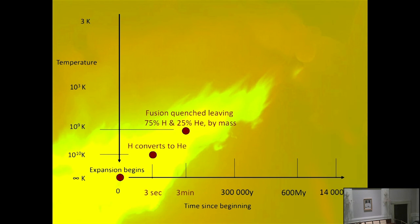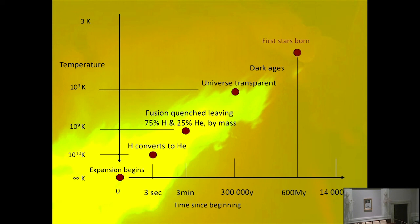And then everything expands, cools, and dilutes until the gas becomes neutral and transparent. The universe enters a literally dark age when the cooling shifts the primordial light into infrared. And then the first stars form and light it up again.